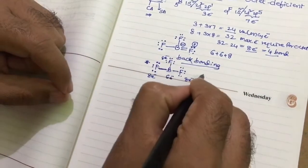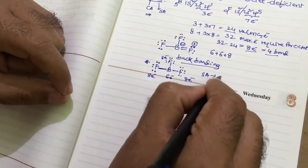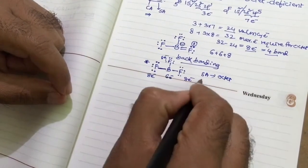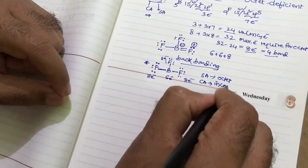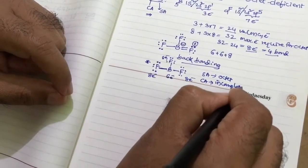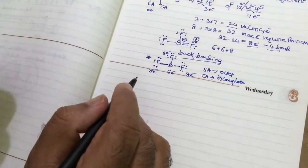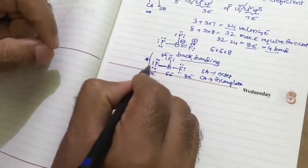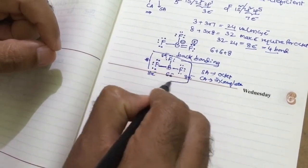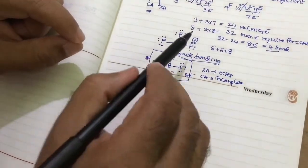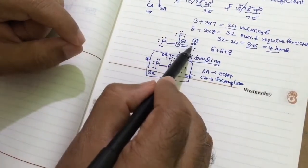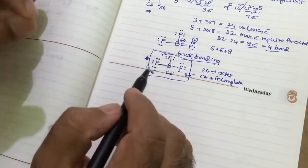Then surrounding atoms are octet, but central atom is incomplete octet. It is incomplete octet, but also this representation is good representation for boron trifluoride. We know that negative charge on the boron, positive charge on the fluorine, that is not acceptable.